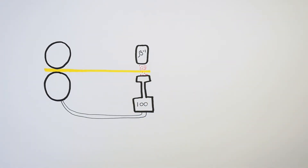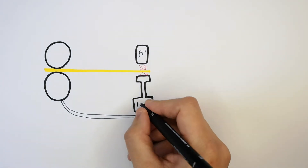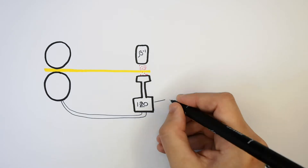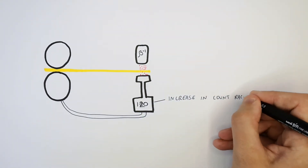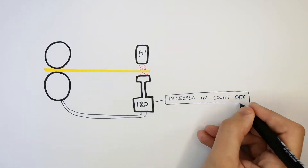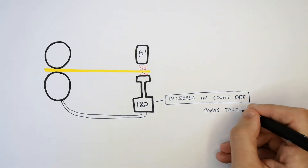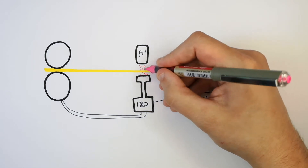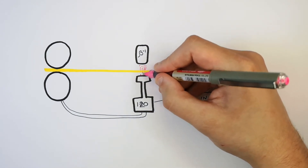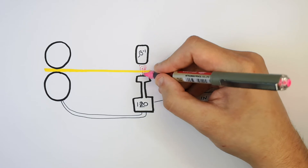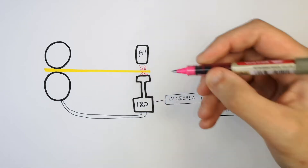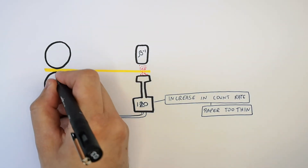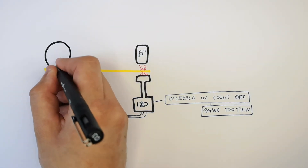Let's now imagine that the beta particle detector detects a new count rate of 120. That means the count rate has gone up, which is an indicator the paper is too thin. The reason the count rate has gone up is because the paper is now thinner, meaning more beta particles are penetrating through to the detector.